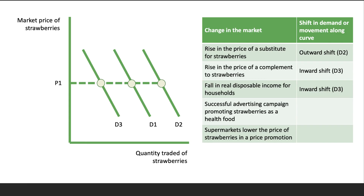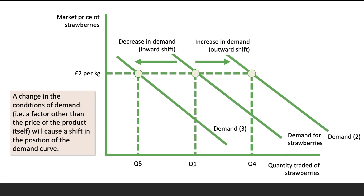A successful advertising campaign promoting strawberries as a health food should cause an outward shift from D1 to D2, because the perceived utility or health benefit has gone up and therefore more people are in the market at any given price. The last one: supermarkets lower the price of strawberries on a price promotion. Which way does the curve shift? The answer is it's not going to shift at all - a change in the price of the product itself causes a movement along the demand curve, so we move down D1 to a higher level of quantity traded.